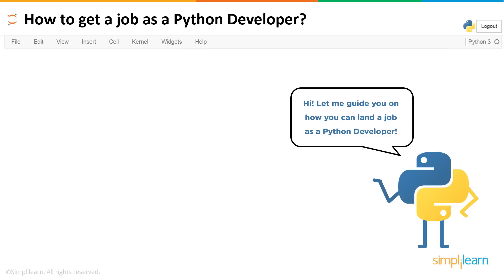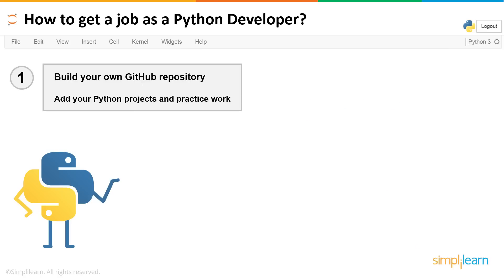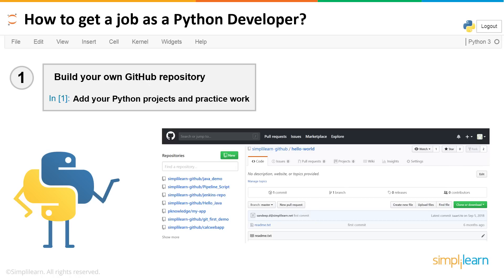Tip number one: build your own GitHub repository. Go on GitHub, create a repository, and add all your files and Python code there. It doesn't matter if it's a big project or some small piece of code. Learn a bit of GitHub version control — not only upload your file once, but make modifications, rework on them, and upload again to show your progress. This GitHub repository basically becomes your resume as a Python developer. Recruiters can look directly here instead of you sending them zip files or Jupyter notebooks — everything is available online.